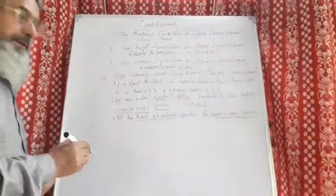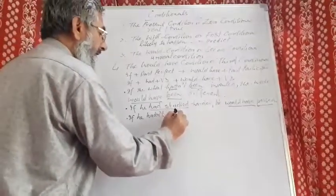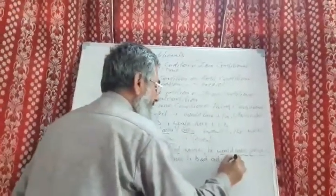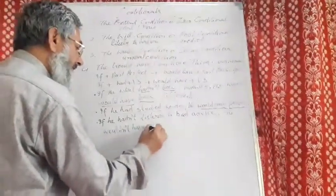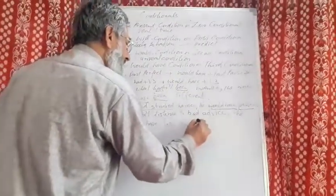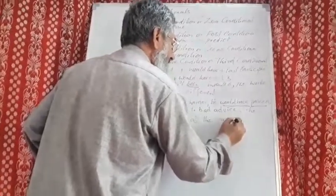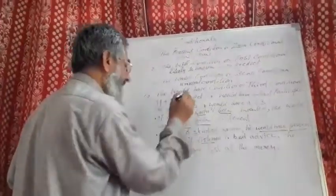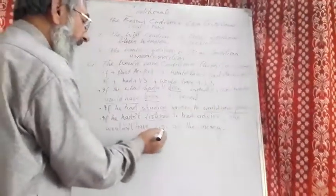So this is the would have condition or third conditional. Another example: if he hadn't listened to bad advice, he wouldn't have lost all the money. Again, had listened — had plus past participle in the if-clause. And in the main clause, would have plus lost, which is the third form.